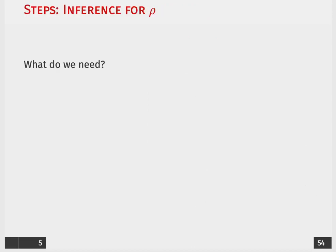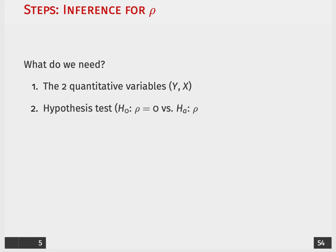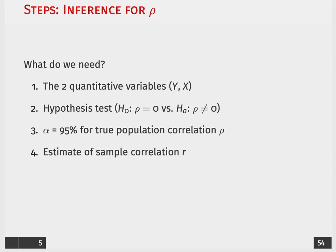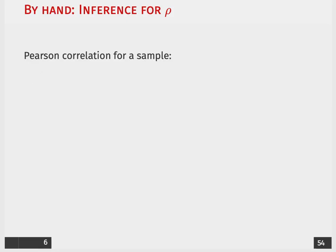So in order to make an inference about our correlation coefficient, we need to have a couple of things. Remember, going back to our hypothesis testing, we need to have two quantitative variables, an x and a y. We'll set up our hypothesis test such that our null is that there is no relationship between the two variables. Our critical threshold is going to be 0.05, so in essence, the confidence intervals that will be surrounding our test statistic will be 95% confidence intervals. And then we'll take an estimate of our sample correlation. That's going to be small row r. We'll generate that test statistic. We'll get a p-value then, and then we can make some sort of inference about our null hypothesis.